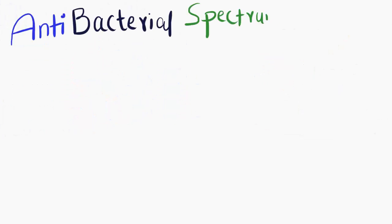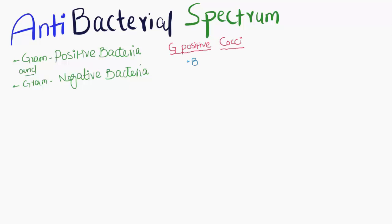Tetracyclines are effective against gram-positive and gram-negative bacteria, as well as against organisms other than bacteria. Gram-positive cocci include Bacillus anthracis.